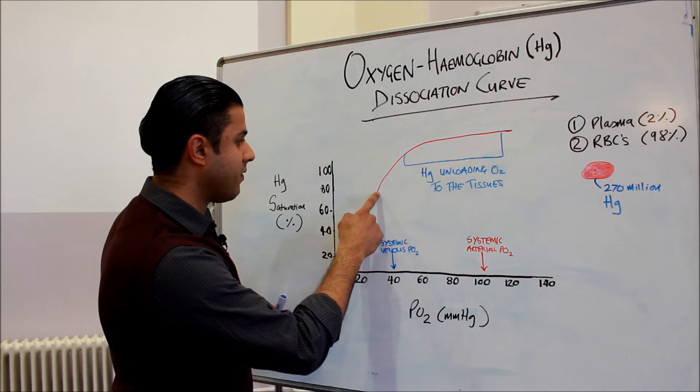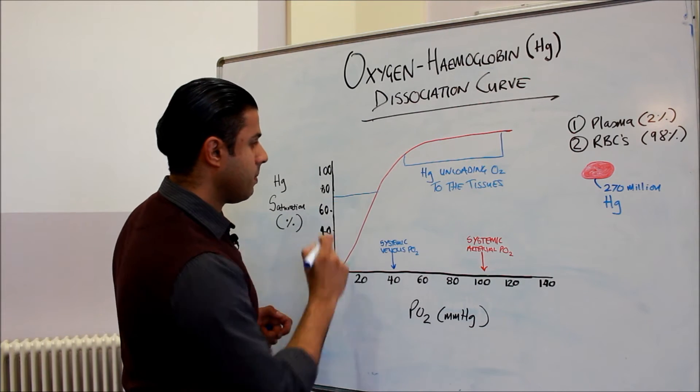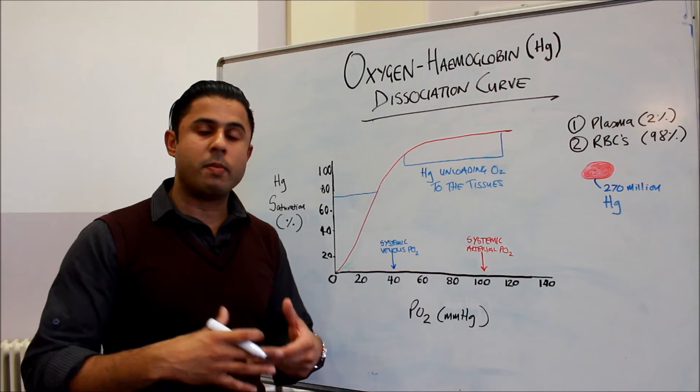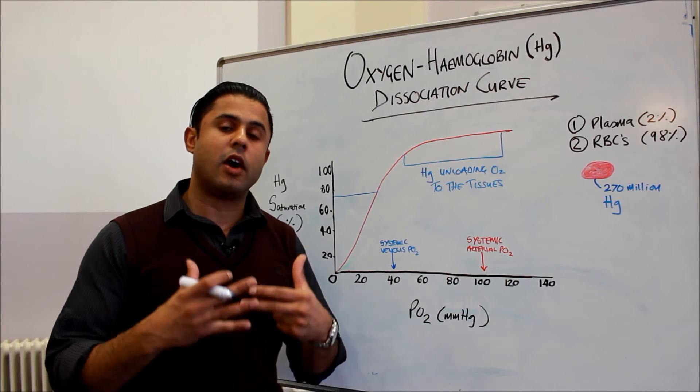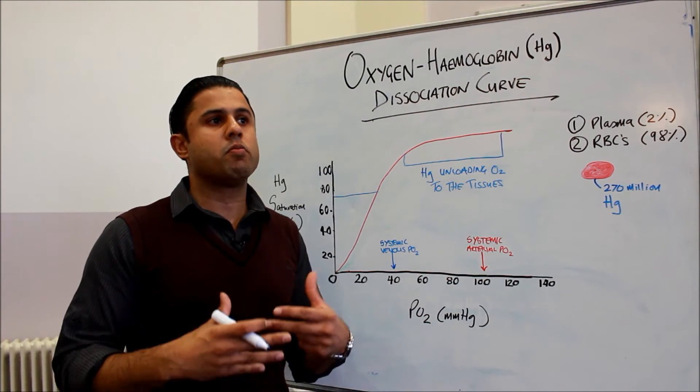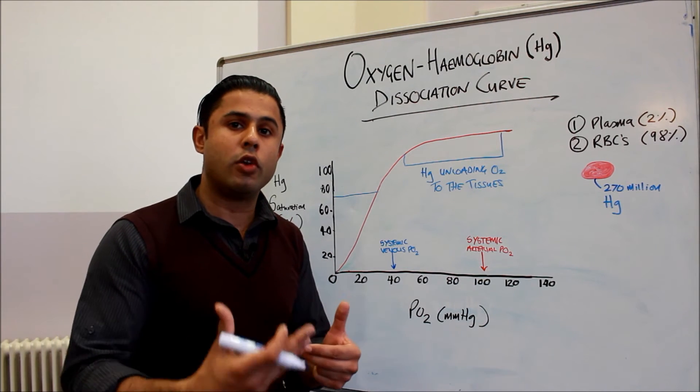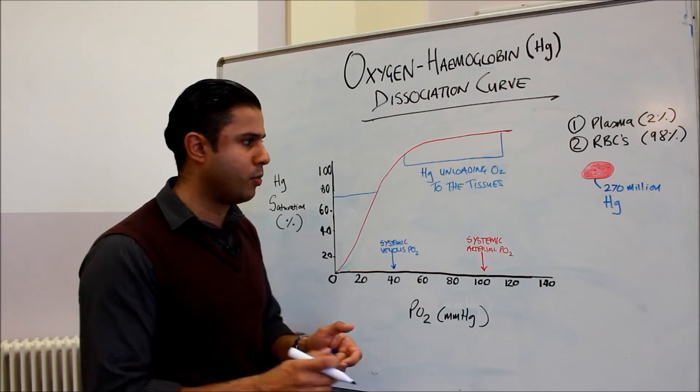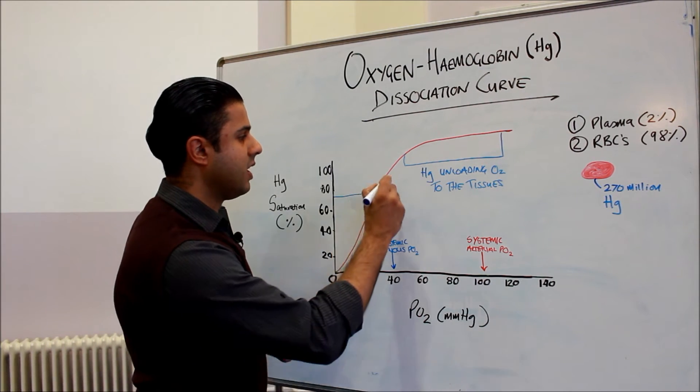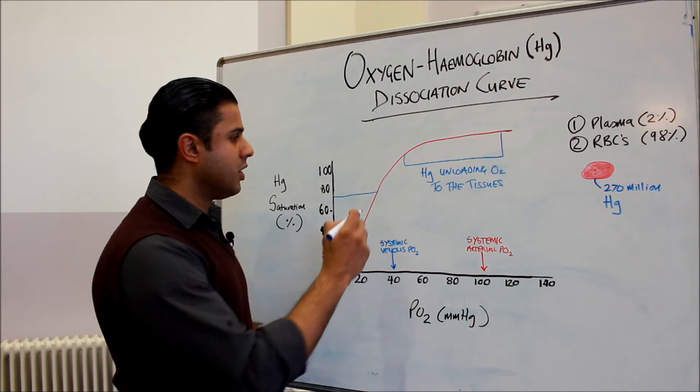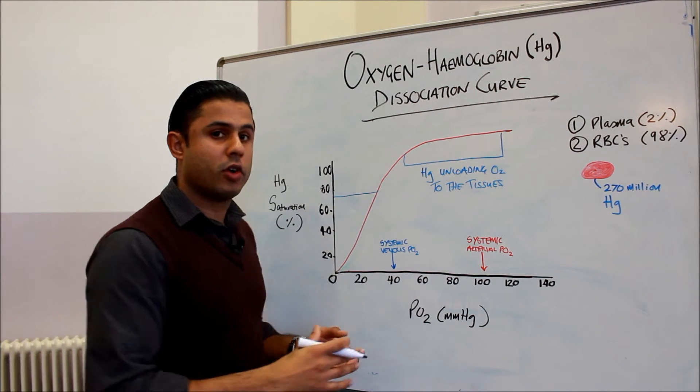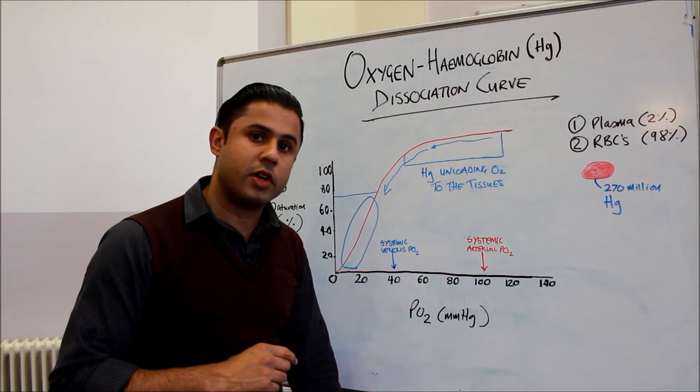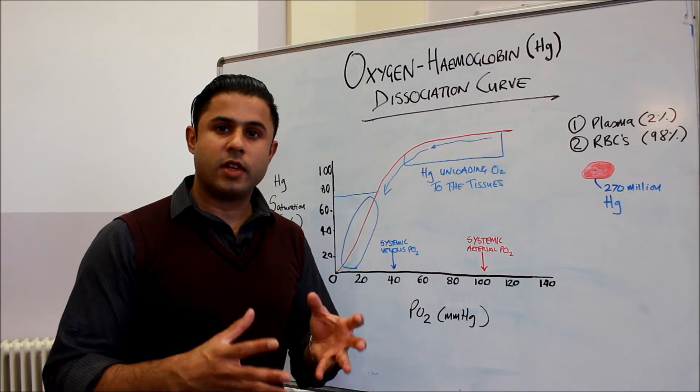But we still have approximately 75% of the hemoglobin saturated with oxygen. Now this is remarkable because it means that the hemoglobin always has an increased capacity to unload oxygen should the demand for oxygen increase in the tissue. So let's have an example: if we were exercising, what might happen is we would require more oxygen, so we can actually have the hemoglobin giving up the oxygen that it contains a lot earlier.